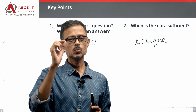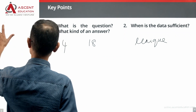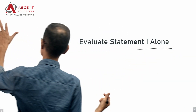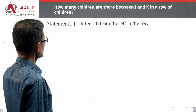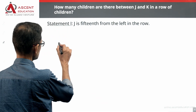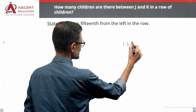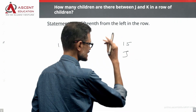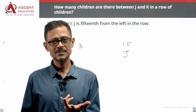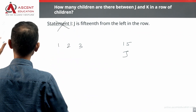We need to come up with one single answer. Let's get started by evaluating the statements. We'll look at statement one alone. Statement one says: J is 15th from the left in the row. So counting from the left, J is in the 15th position. However, there is no data about K's position in statement one.